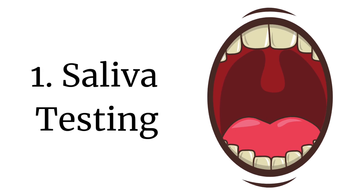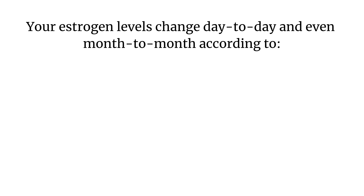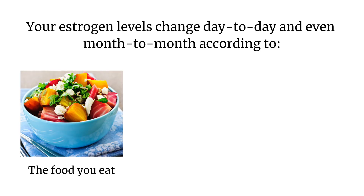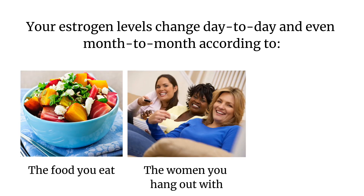Here are three ways to test your estrogen levels. Number one: saliva testing. Estrogen can be measured in your saliva. If you're a reproductive-age woman, saliva samples need to be collected every single day, starting from the first day of your period through to the first day of your next period. Your estrogen levels change day to day and even month to month according to the foods you eat, the women you hang out with — because you tend to cycle together — and the stress you're under. Saliva testing is a very accurate way to test estrogen levels, but not very convenient.